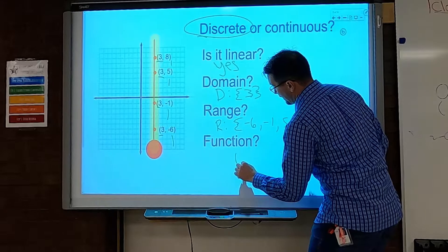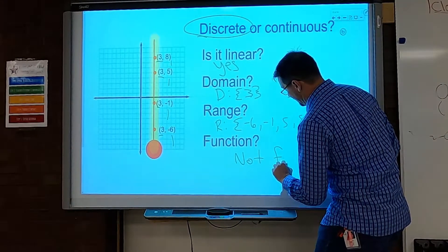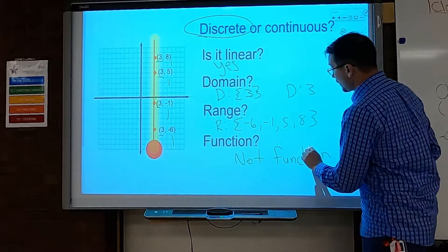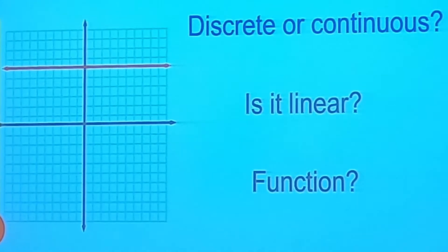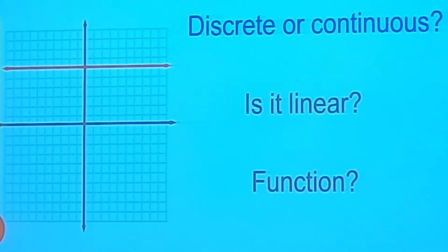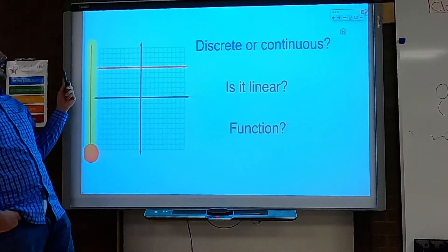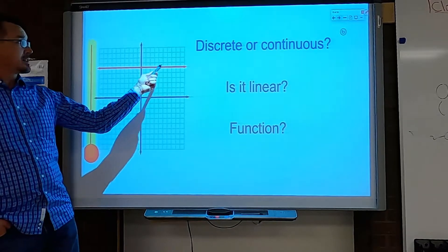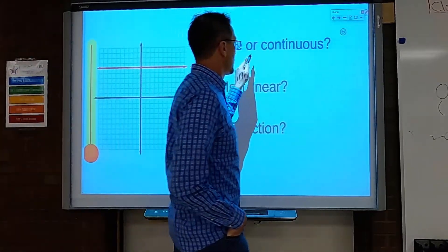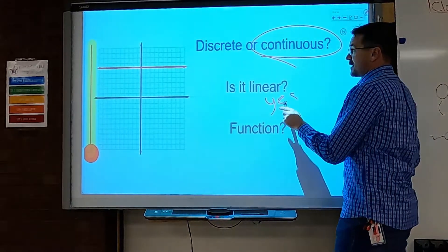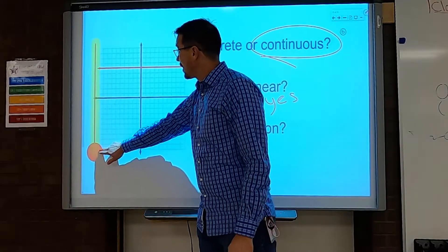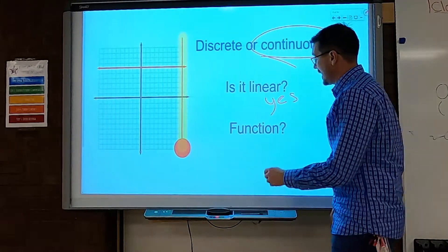Let's try this one. Discrete or continuous? This is a straight line with no dots, going on forever, so it's continuous. Is it linear? That's a straight line, so yes. Is it a function? I draw my vertical line across and I don't see a repeat, so yes, this is a function. Vertical line test passes quickly.